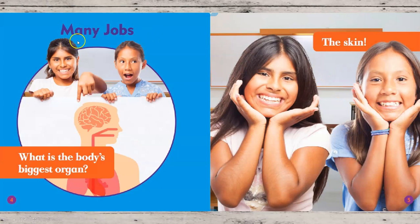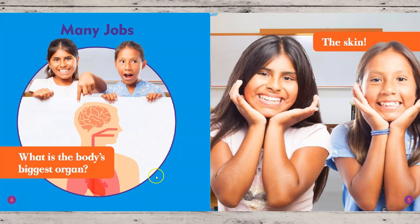The first chapter is called Many Jobs. What is the body's biggest organ? The skin. When they're talking about an organ, they're not talking about a musical instrument — they're talking about the parts of our body that help us run, and talk, and sleep, and eat, and think, like our brain, and our heart, and our lungs. The skin is the biggest one of all.